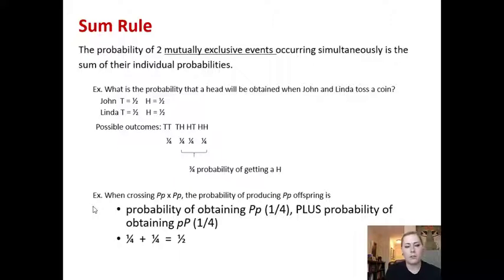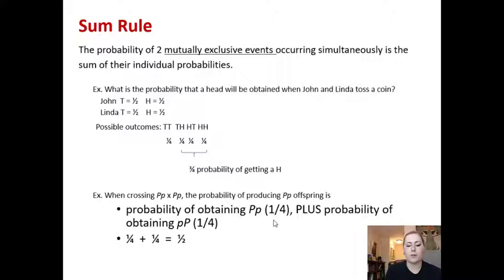Applying the sum rule genetically: if we cross two heterozygotes for purple flowers, the probability of producing a heterozygote offspring is calculated by picturing a Punnett square. There's a one-in-four chance of getting big P, little p, plus a one-in-four chance of getting little p, big P — adding them gives a one-in-two chance of getting a heterozygote offspring from two heterozygote parents.